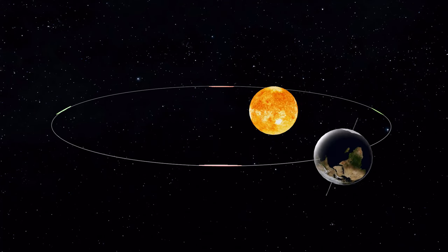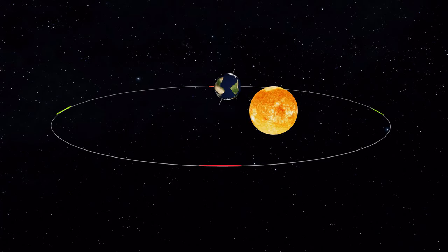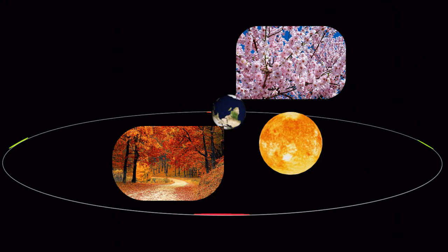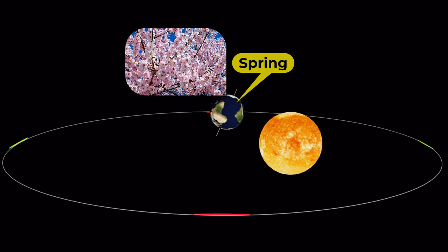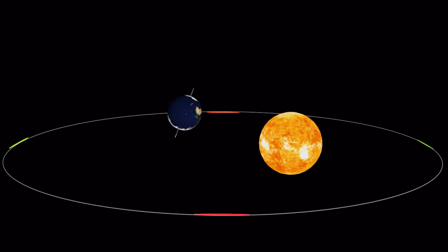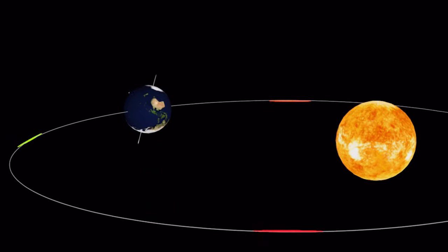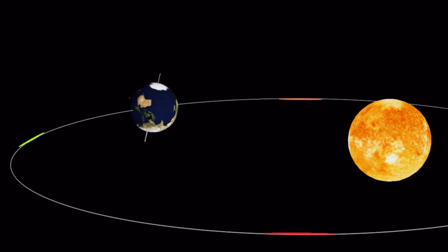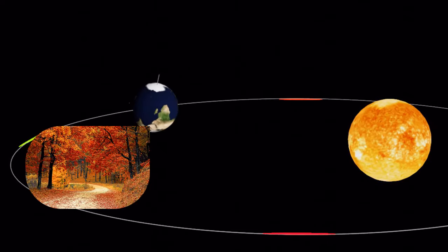As the Earth orbits the Sun, different parts of the Earth receive different amounts of sunlight depending on the season. The Northern and Southern hemispheres experience opposite seasons due to the tilt of the Earth's axis. During the spring, the Northern Hemisphere begins to tilt towards the Sun, bringing longer days and warmer temperatures — the time when flowers and trees start to bloom. At the same time, the Southern Hemisphere begins to tilt away from the Sun, marking the start of the autumn season.